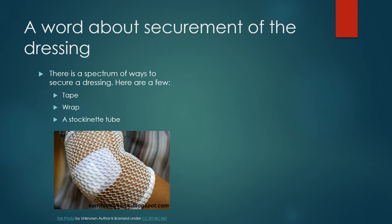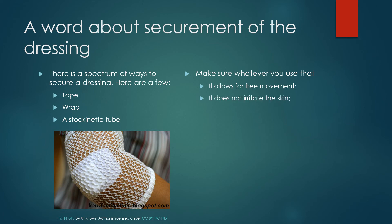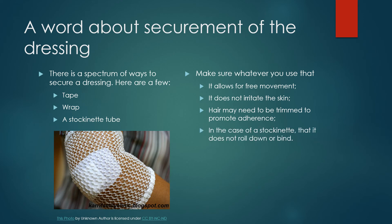A word about securement of the dressing. There's a spectrum of ways to secure a dressing: you can tape it, wrap it, or use a stockinette. Make sure whatever you use allows for freedom of movement and does not irritate the skin. Hair may need to be trimmed to promote adherence if using tape. In the case of a stockinette, make sure it doesn't roll down or bind. It must not impair circulation or cause swelling from too much compression or being too tight. For example, never place tape circumferentially around an arm or a limb.